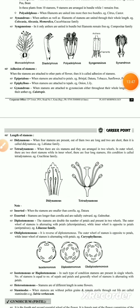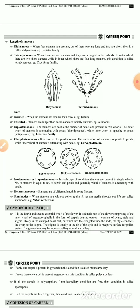Adhesion is when stamens are attached to other parts of the flower. Epipetalous: stamens are attached to the petals. Epiphyllous: stamens are attached to the perianth. Gynandrous: stamens are attached to the gynoecium.